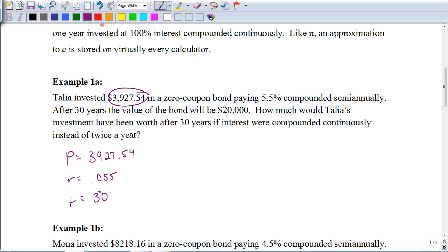So again, if it had been compounded semi-annually, after 30 years, it would be approximately $20,000. We want to see, well, what would the difference be if it was compounded continuously?